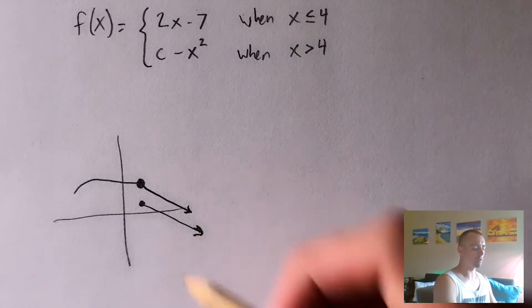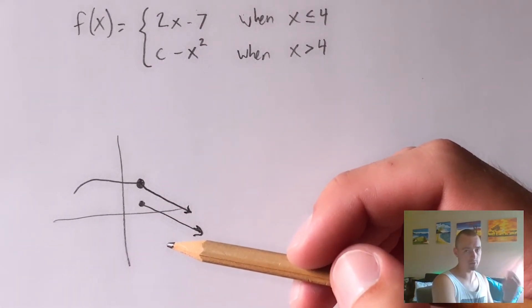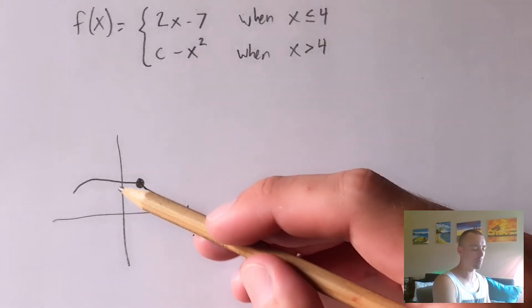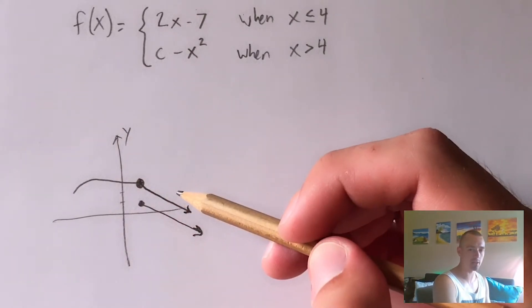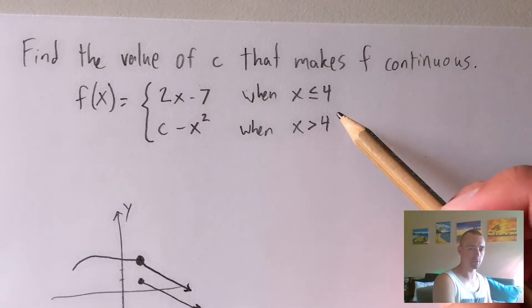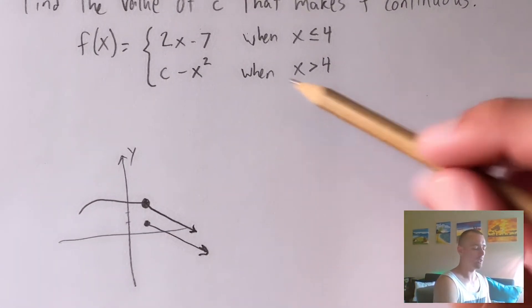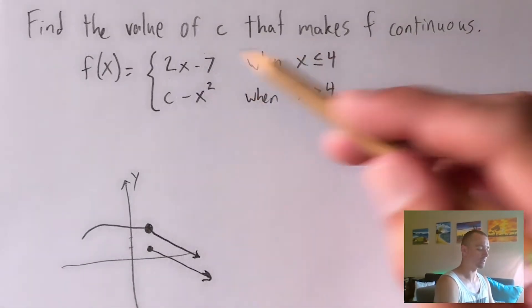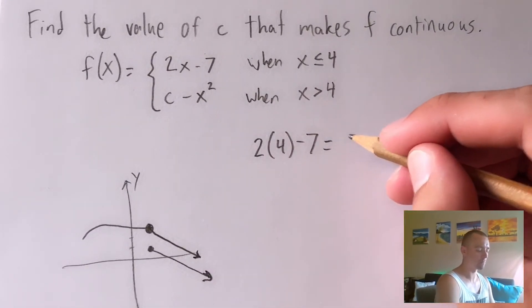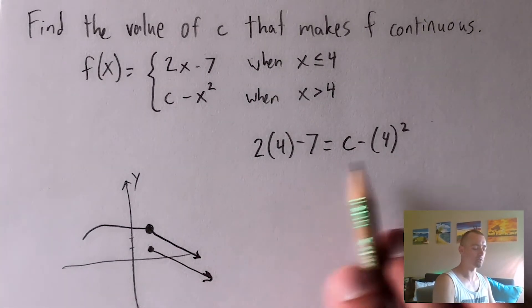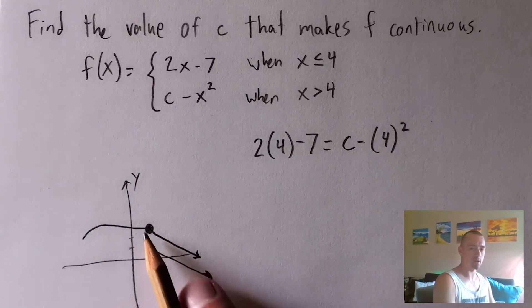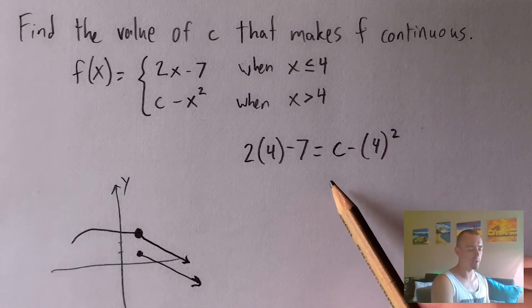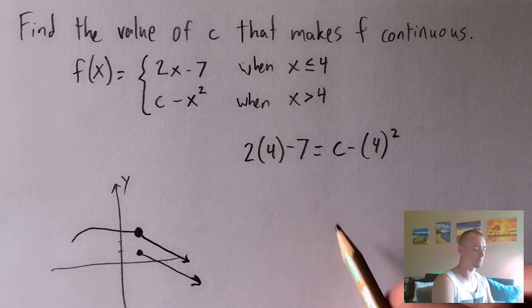Algebraically, this means we need the output of each piece to be the same at x equals 4 — the y-value, or height, of each function must match at that switching point. So we plug x equals 4 into both pieces and set them equal to each other. As long as those two pieces give the same output when x equals 4, the piecewise function will be continuous there. All we have to do is solve that equation for c.